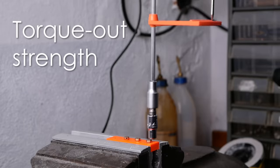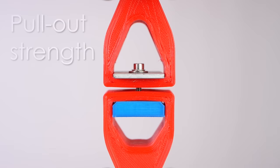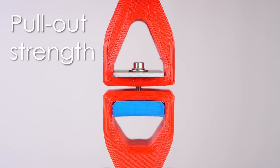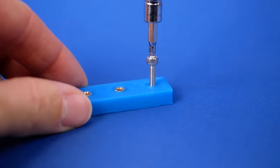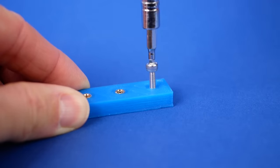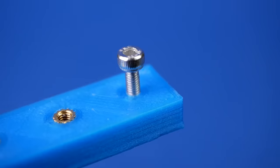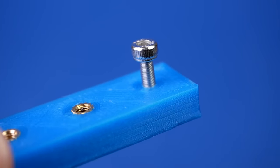We'll be testing the torque-out strength which is the resistance against a rotational load and the pullout resistance which is an axial force. Since I was also curious how my usual method for screwing parts together works in comparison, I also printed samples with slightly undersized holes in which I directly screwed the M3 screws.